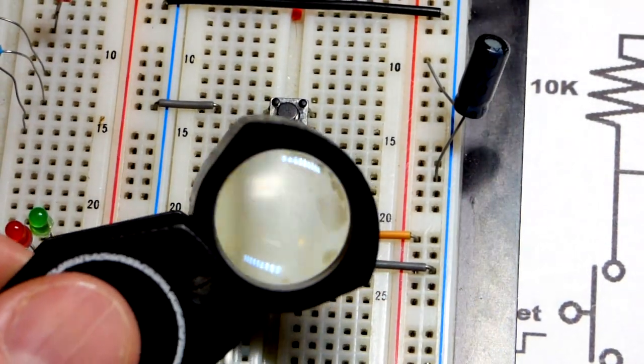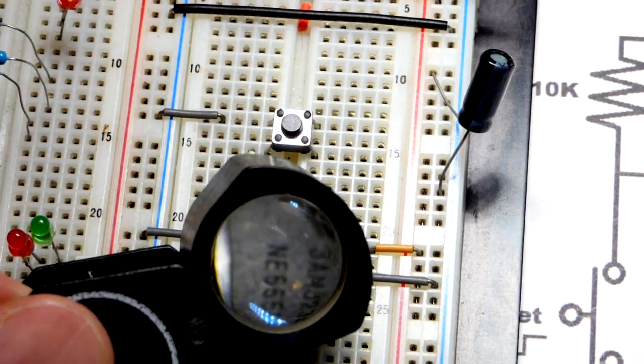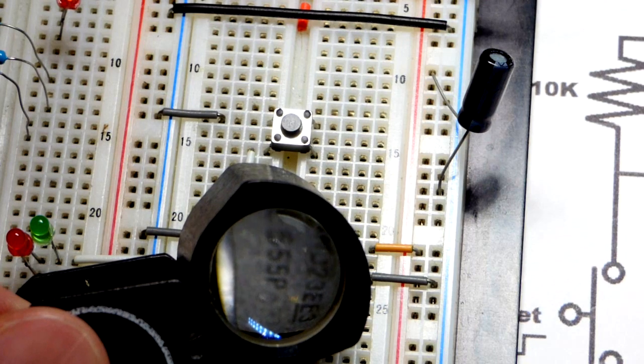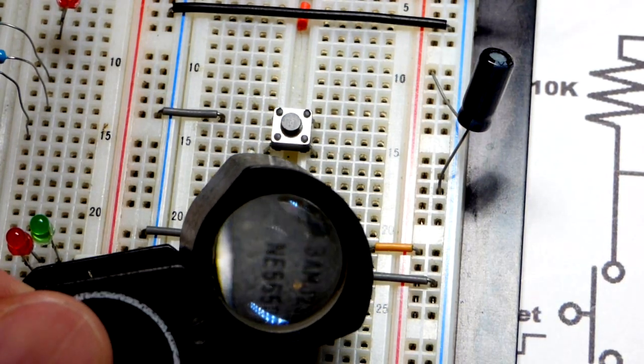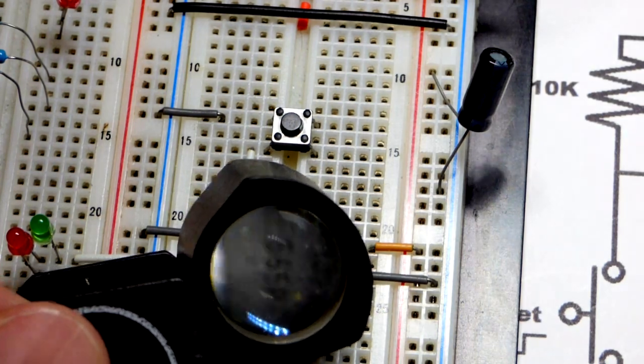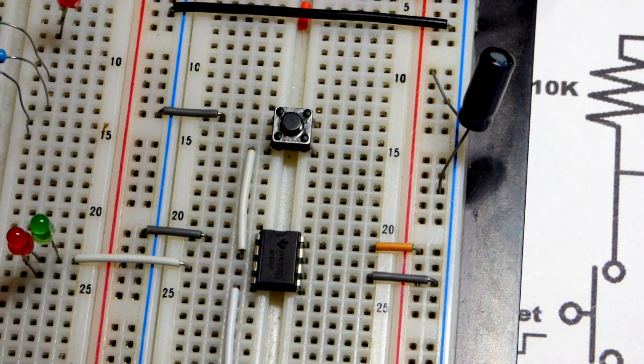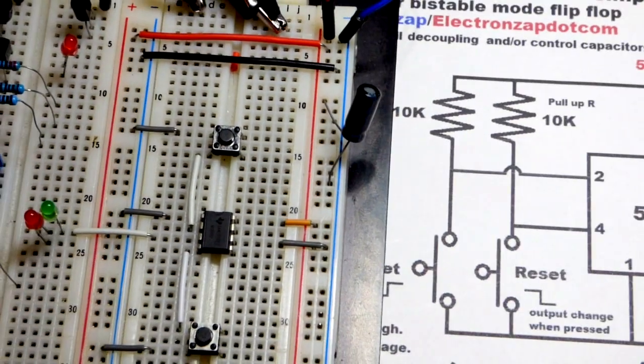So the actual 555 timer that I'm using once I get a good view here is the NE555. And it has the P, so it's some kind of variation. I'm not sure. It's probably a slight improvement. But in any case the NE is part of the 555 timer. So there's different 555 timers that work basically the same, but they may have some different electrical properties.